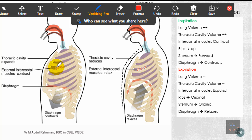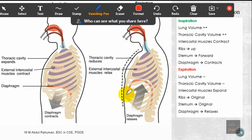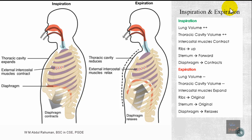Expiration is actually the opposite of inspiration. The lung volume decreases, the thoracic cavity collapses or reduces, and the intercostal muscles which had contracted earlier now start to relax. When they relax, the ribs come down and the sternum returns to its original position. The diaphragm, which is a curved muscular structure, also relaxes and automatically pushes all the air out of the lungs. This is the process of expiration.